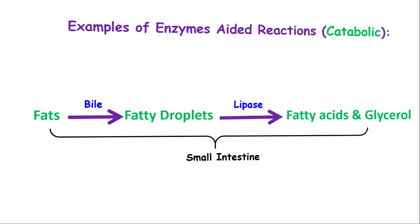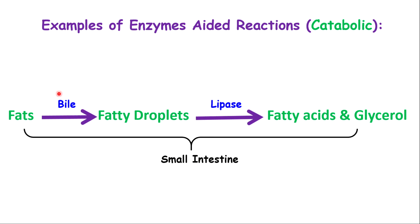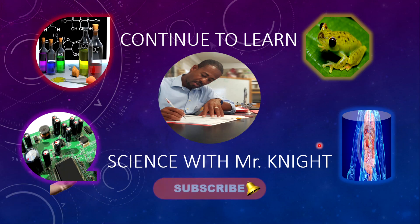The last bonus is about fats. Fats are broken down by bile first — bile is not an enzyme; rather it is a salt, so you can say bile salts. Fats are broken down by bile into fatty droplets, which are brought to the small intestine where they are broken down by lipase, also produced by the pancreas. The end result from the digestion of fat is fatty acids and glycerol. I hope you enjoyed this lesson — if you want to see more lessons like this, please subscribe and share. See you in the next lesson.